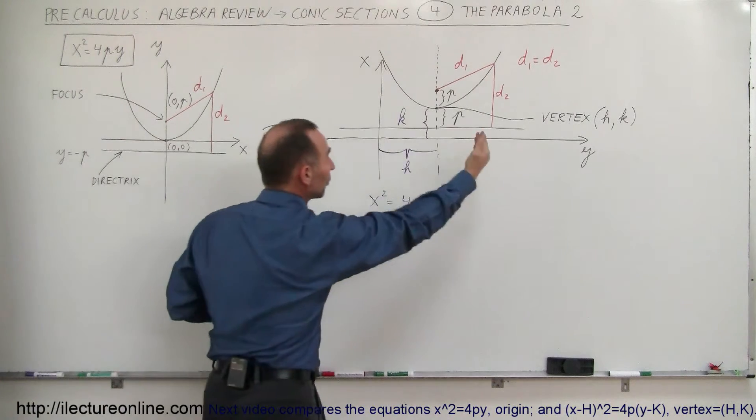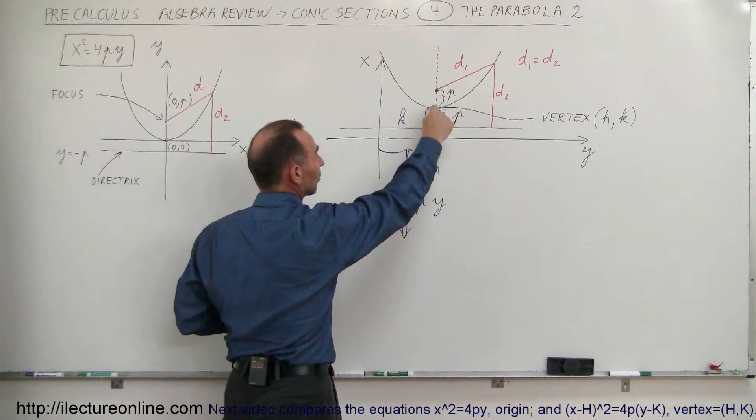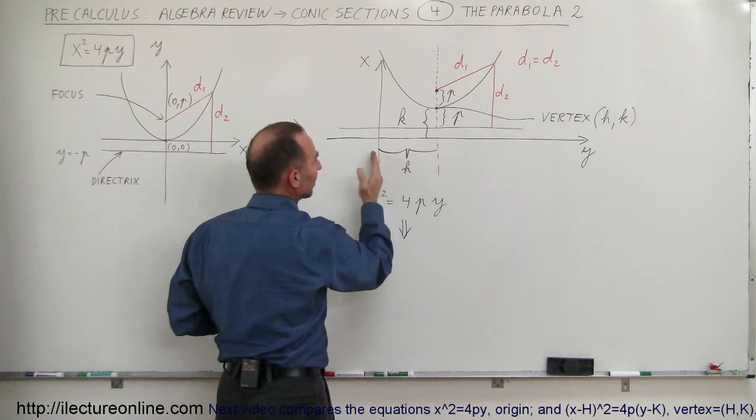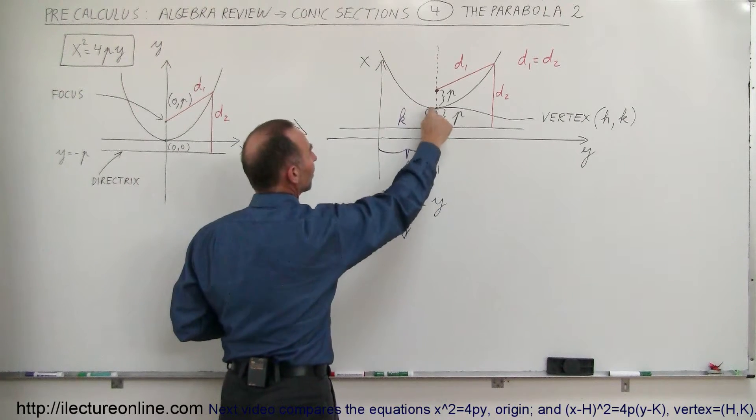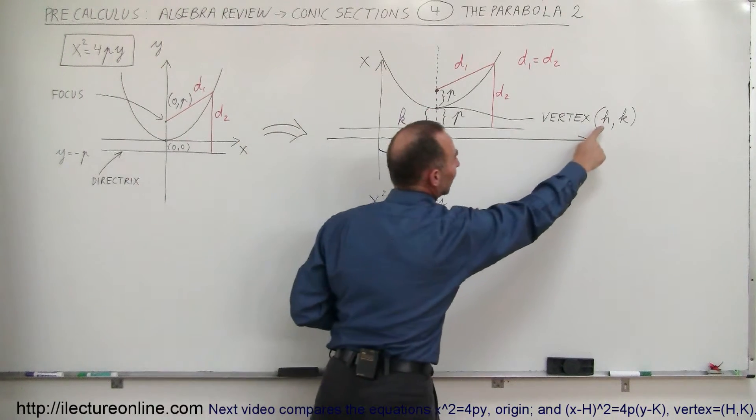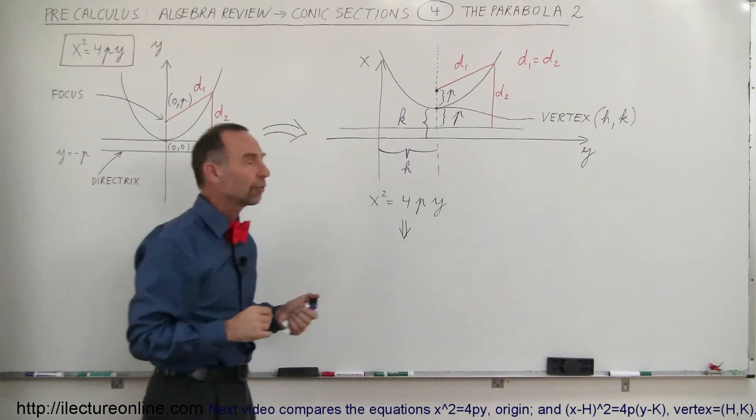We've arbitrarily moved it to some different locations right here, so the vertex is at this new location where the x value now is h and the y value is k, which means the vertex is now at (h,k). Those are the coordinates of the vertex.